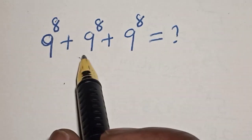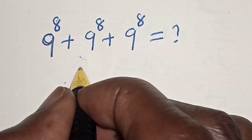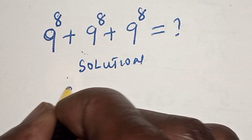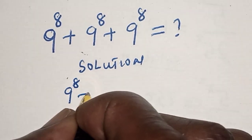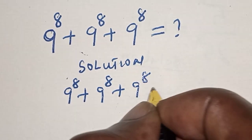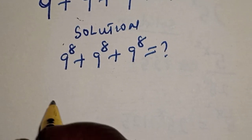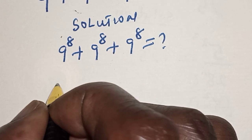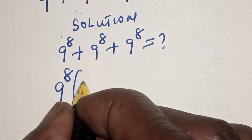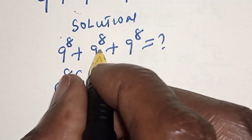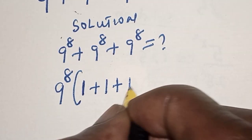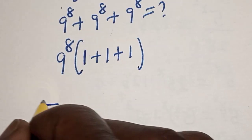Like, share, comment and subscribe. Solution: this is 9 raised to power 8 plus 9 raised to power 8 plus 9 raised to power 8. We don't know the value yet. 9 raised to power 8 is common, let's bring it out: 9 raised to power 8 bracket, then each term divided gives 1 plus 1 plus 1.